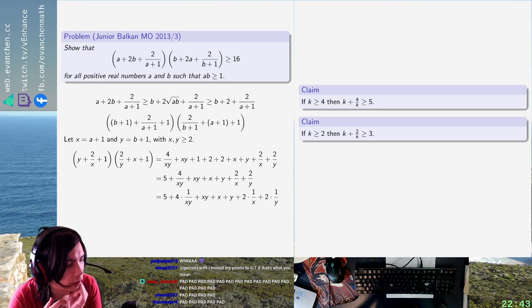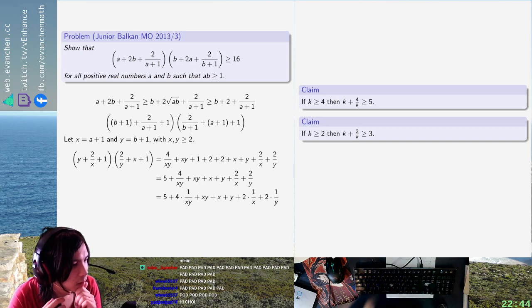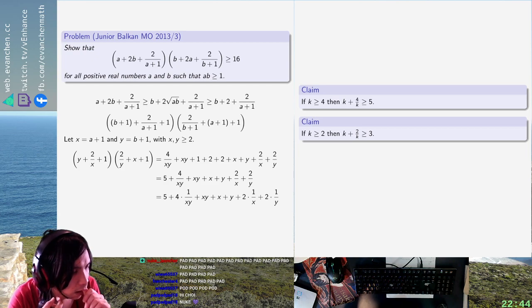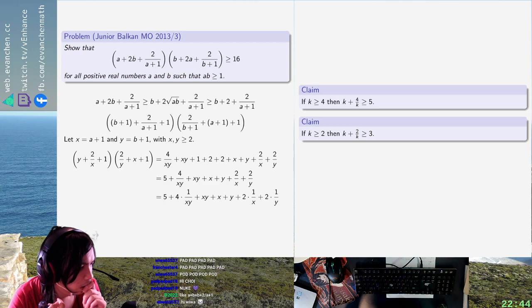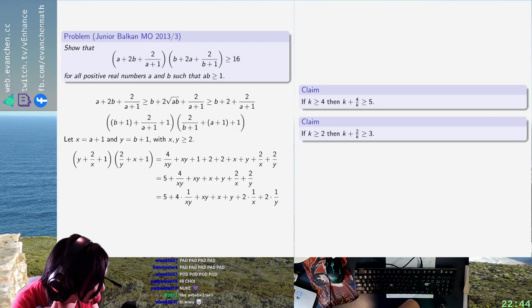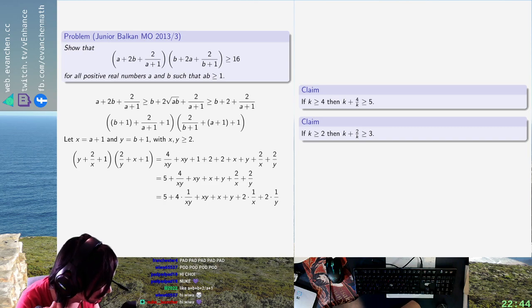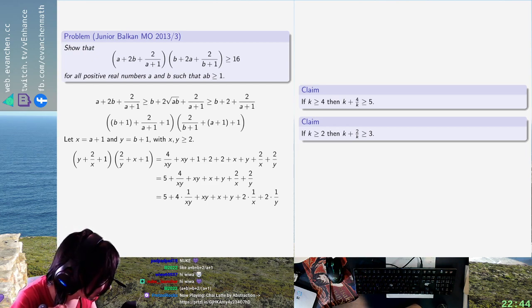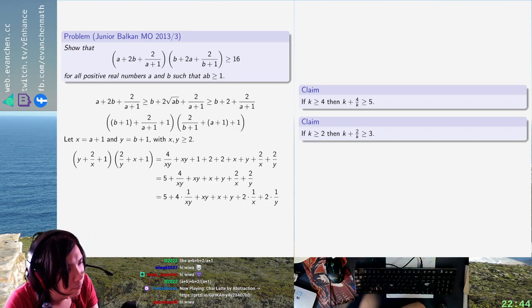Doesn't Cauchy and AMGM work? What do you have in mind? A plus B plus B plus 2 over A plus 1. Oh, wow, that's very smart. I guess so. No, wait. You can't just do straight. You want to do Cauchy on that? I guess that's probably... I don't know.